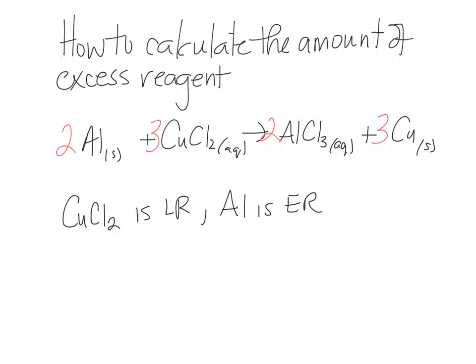That means that at the end of this reaction, all the copper chloride is used up, but there's some aluminum metal left. And you'll physically be able to see this. The blue color from the solution of the copper chloride is gone. It's now colorless. And we will have a piece of silver aluminum still left in the beaker.